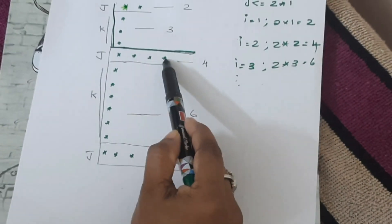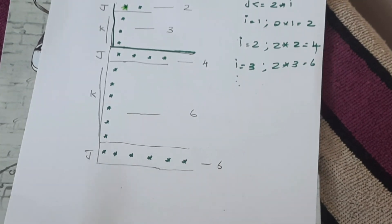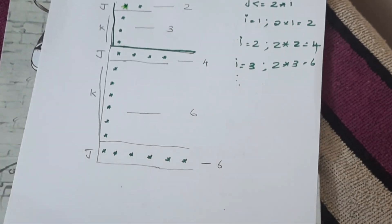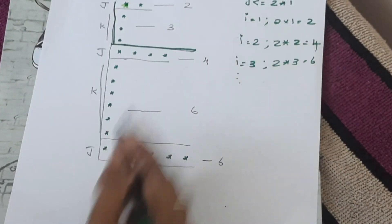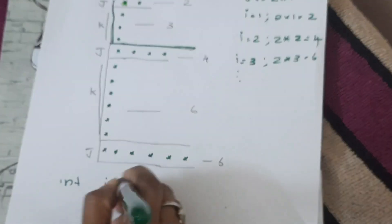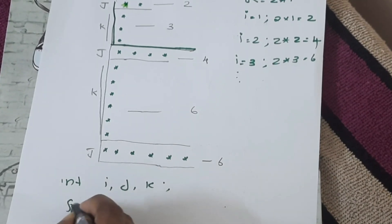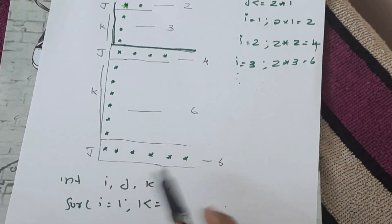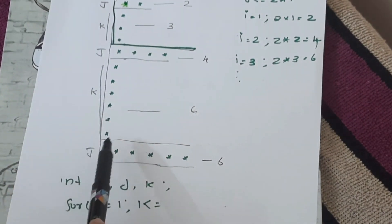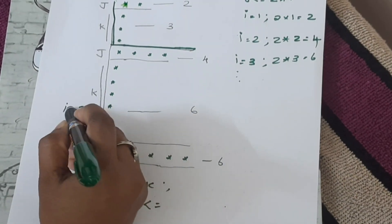We can see the J is on the J loop. We can see what the J loop is doing. We have the J loop inside the J loop — here we have a 6 star print. Then this is the program, then the loop.